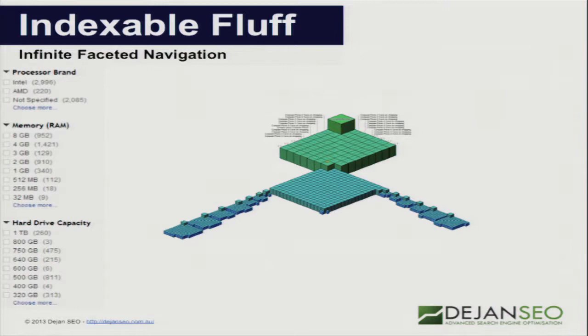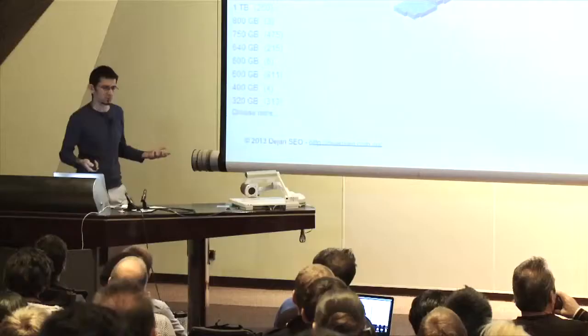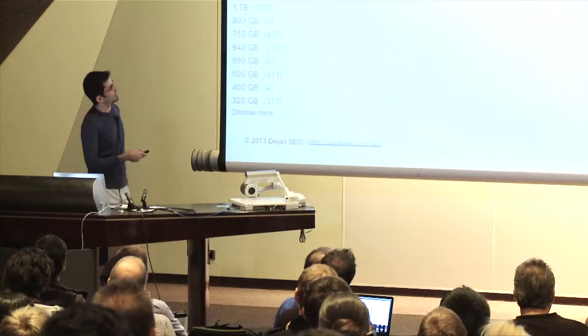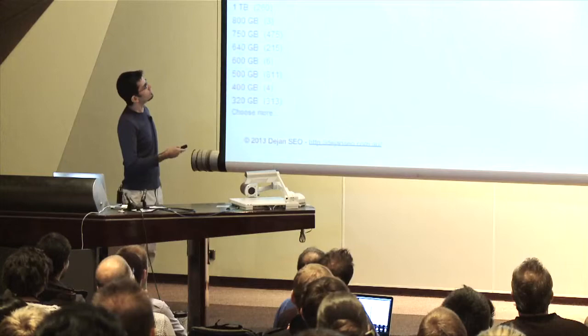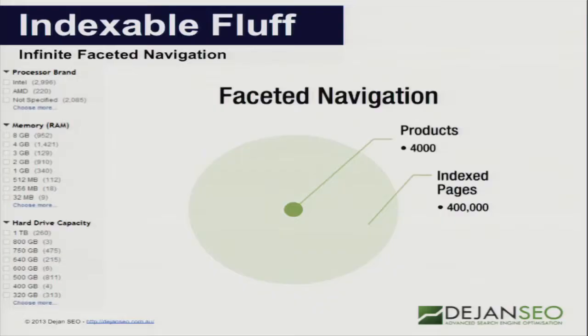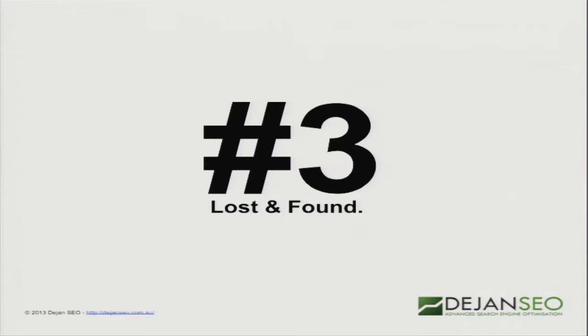To the point where they had 60 million pages in Google's index and only 20,000 products. That goes literally forever until the software crashes. This is an area where you have 4,000 products and 400,000 pages indexed in Google. That is bad. That is Panda food.